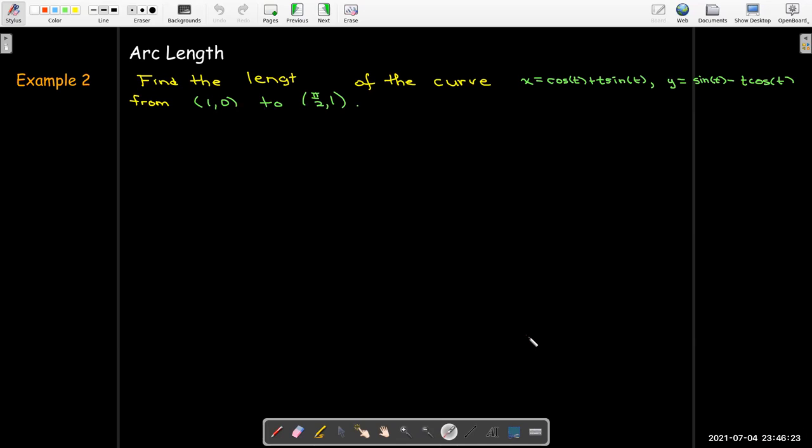Let's do an example with arc length. Find the length of the curve x equals cosine t plus t sine of t, y equals sine of t minus t cosine of t, from the point 1 comma 0 to the point pi over 2 comma 1. So here's our formula. I guess the thing that I need to find are what's alpha and beta. What value of t corresponds to the point 1 comma 0, and what value of t corresponds to pi over 2 comma 1.